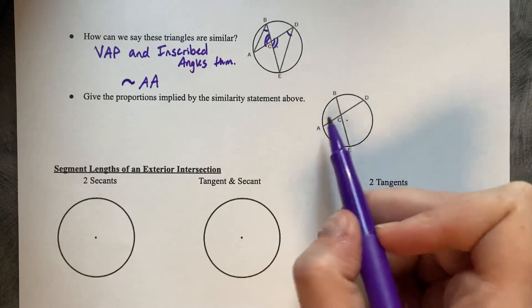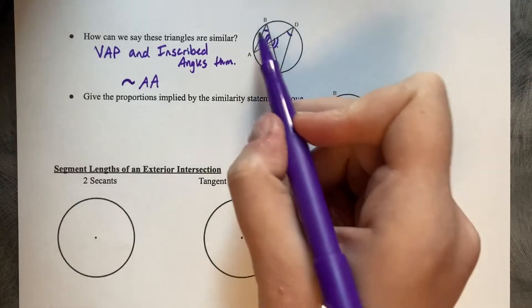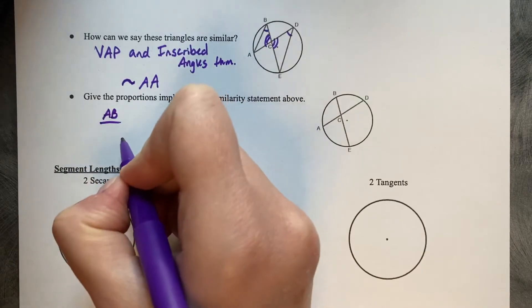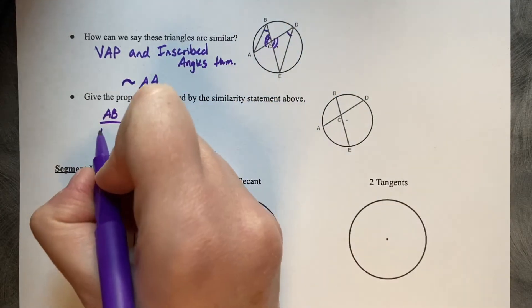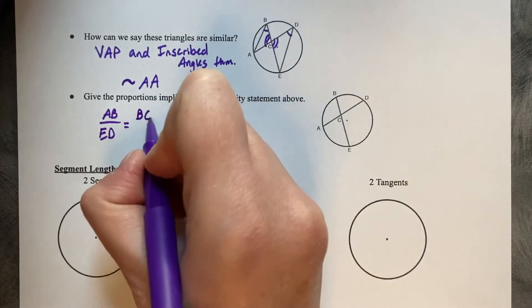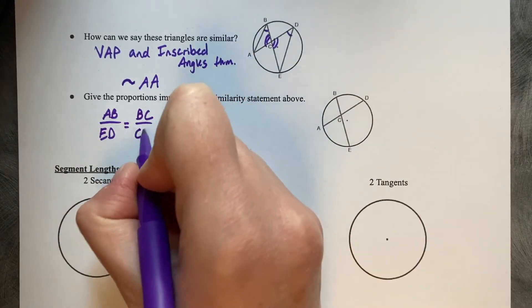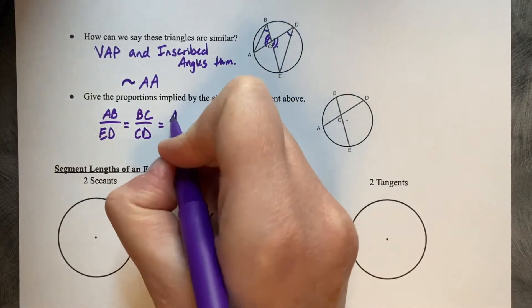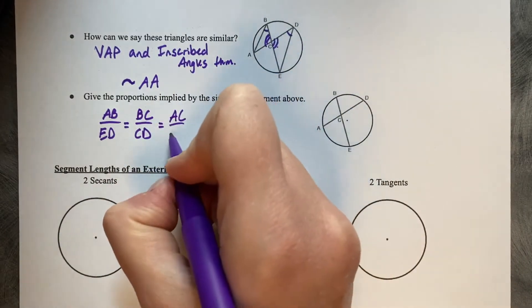So we could say that AB, we're going to take that one away, but AB is similar to ED. We can also say that BC is similar to CD, and AC is similar to CE.